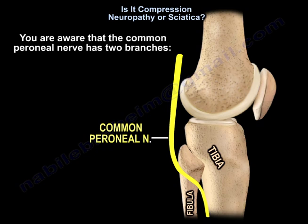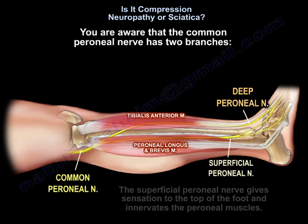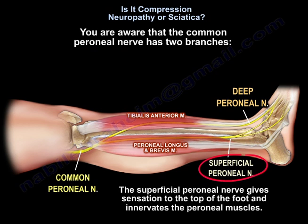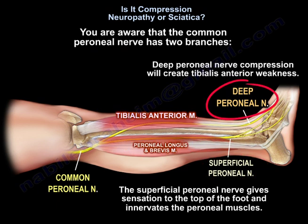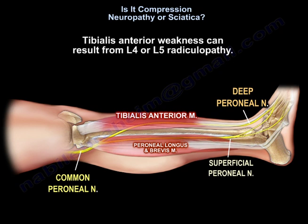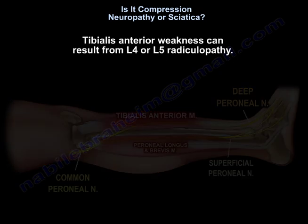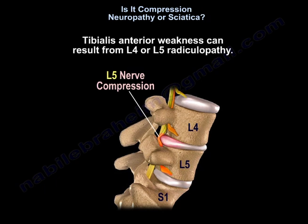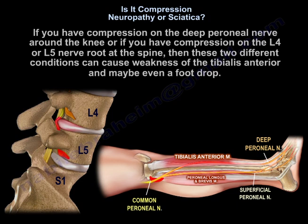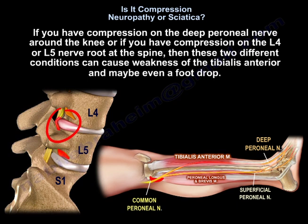The common peroneal nerve has two branches: the superficial peroneal nerve, which gives sensation to the top of the foot and innervates the peroneal muscles, and the deep peroneal nerve, whose compression will create tibialis anterior weakness. That tibialis anterior weakness can result from an L4 or L5 radiculopathy. So compression on the deep peroneal nerve around the knee, or compression on the L4 or L5 nerve root at the spine, can both cause weakness of the tibialis anterior and possibly a foot drop.